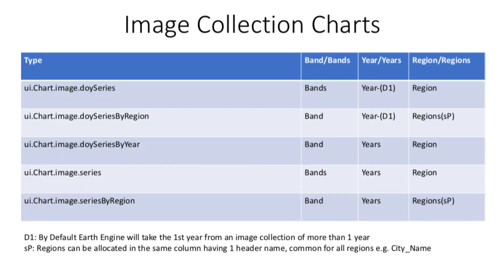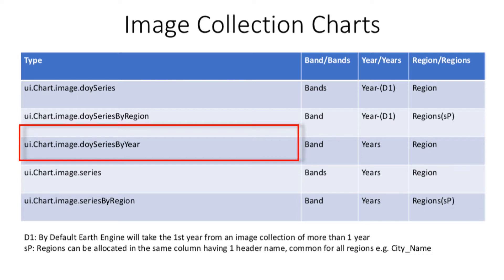Look carefully at this table. These are the image collection charts available on Google Earth Engine at the moment. Let us take a look at the third and final type of chart for yearly data, which is the DOY series by year chart. DOY is an acronym for day of year.